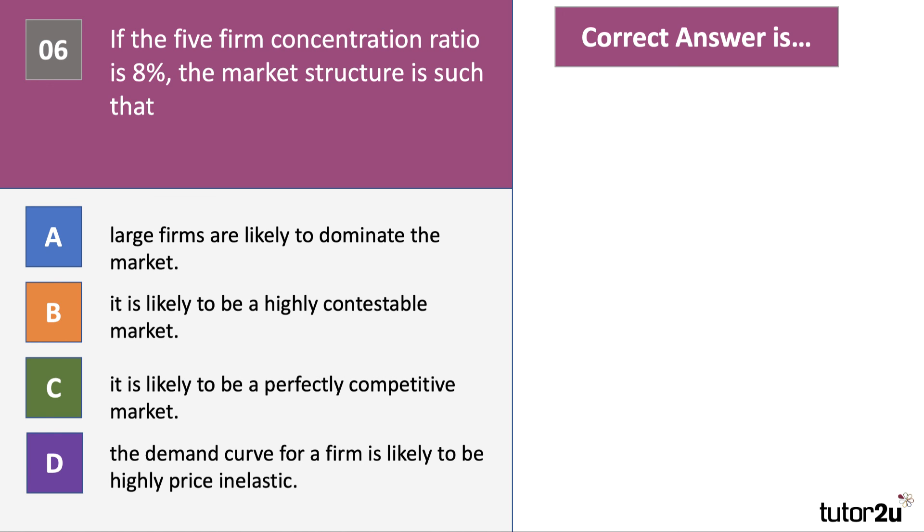Concentration ratio of course is a way of measuring the degree to which a handful of firms dominate the market. And with an oligopoly for example, if the top 5 firms have more than 60% of the market, we say that's an oligopoly. This one is low. This is 8%. So even the top 5 firms barely have 1 tenth of the market in total. So the answer is it's likely to be a highly contestable market.